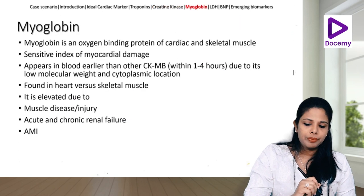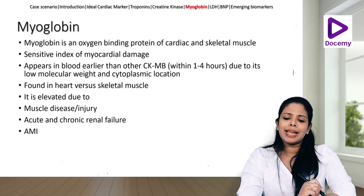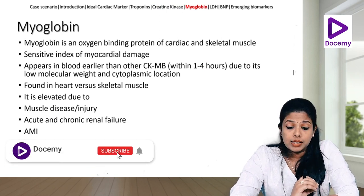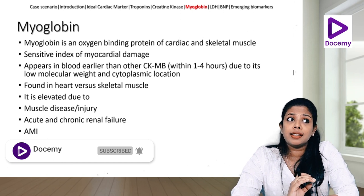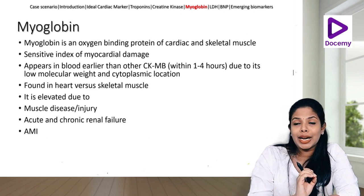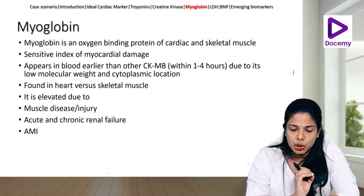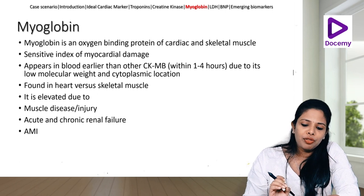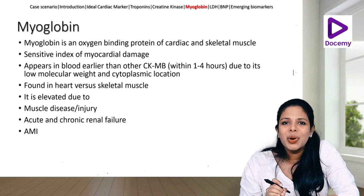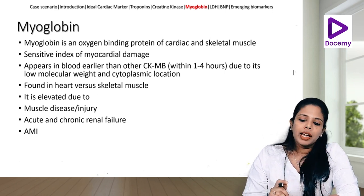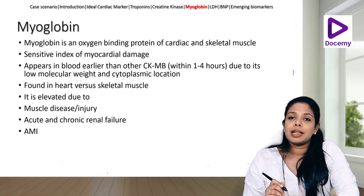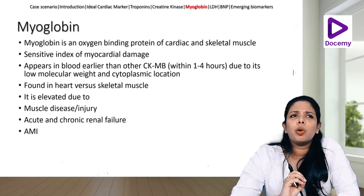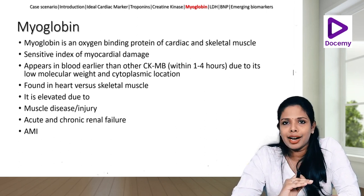Coming to myoglobin — an oxygen-binding protein of cardiac and skeletal muscles. It is a sensitive index of myocardial damage and importantly it is the first marker to rise in acute myocardial injury. It can rise within 1 to 2 hours, peak within 12 hours, and return to normal by 24 hours. It is also seen in skeletal muscle diseases, acute renal failure, and acute MI. The role of myoglobin is very much limited in the current scenario.